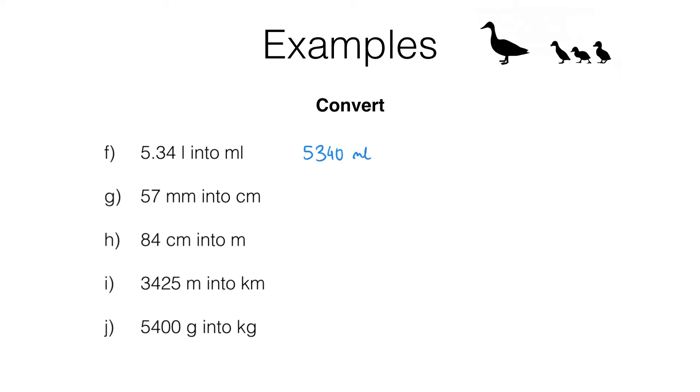Now let's have a look at question G. We want to convert 57 millimeters into centimeters. Now if we start with our basic bit of knowledge that one centimeter is 10 millimeters. This time what we want to do is convert millimeters into centimeters. So we have 57 millimeters over here and we need to work out how many centimeters that is.